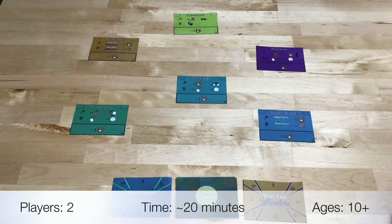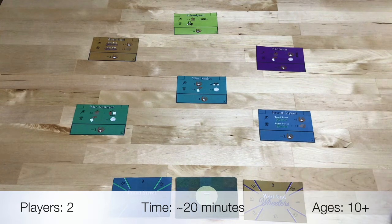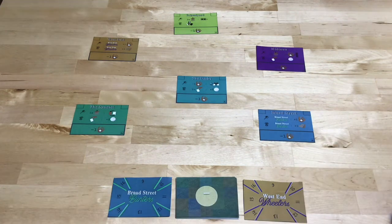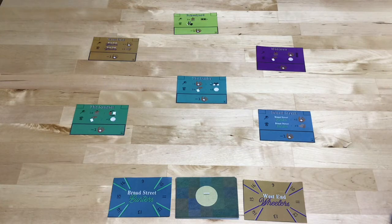This game puts two people in charge of Sandlot Baseball Clubs that are attempting to find and draft pitchers in the local neighborhoods. It uses worker placement, deduction, and auction mechanics, plays two players in about 20 minutes.